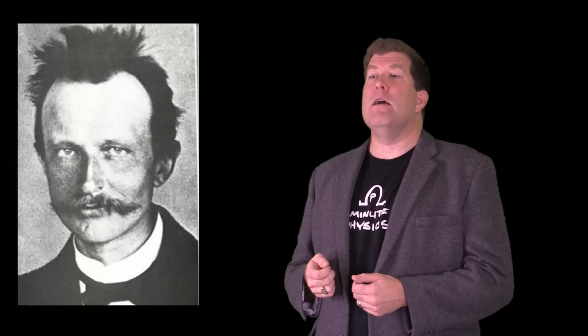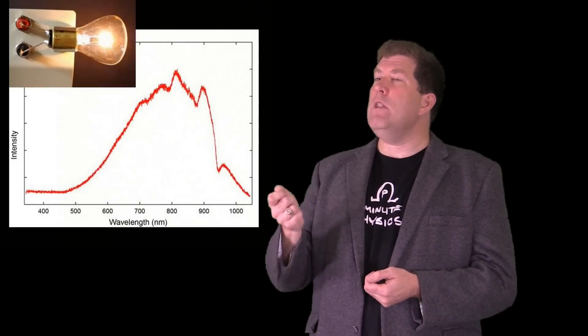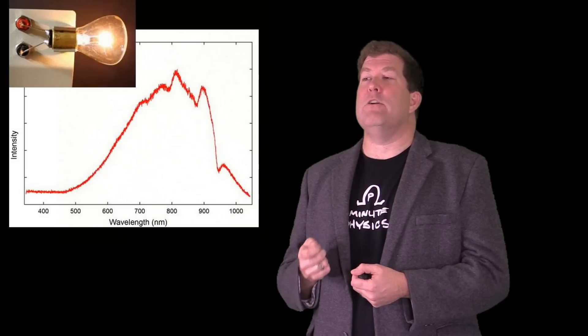The first person to seriously suggest a dual nature of light is Albert Einstein in 1905. But he's picking up on an earlier idea by Max Planck. Planck was trying to explain the spectrum of light emitted by a hot object like a lightbulb filament. And he could do it only by resorting to a desperate mathematical trick.